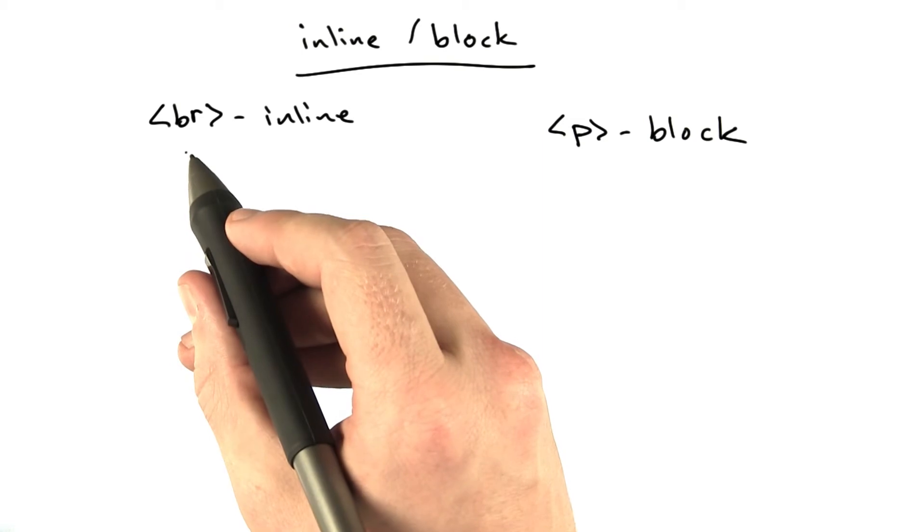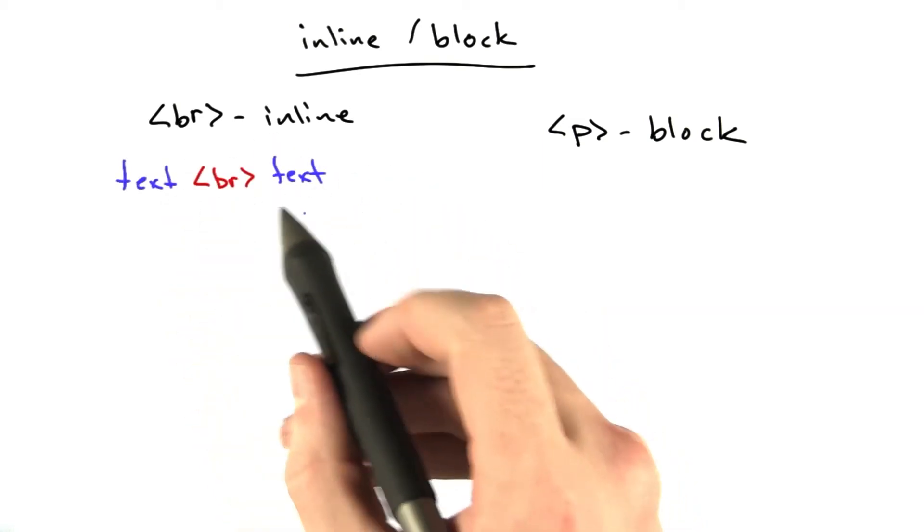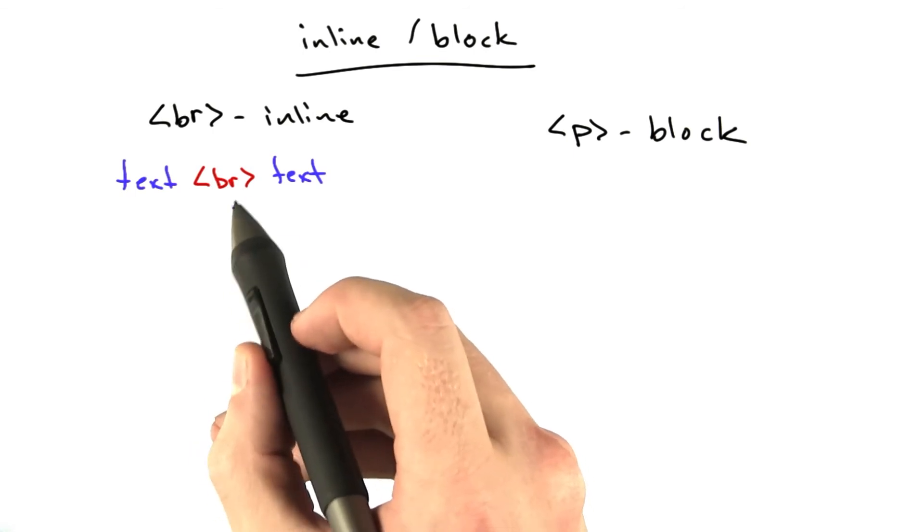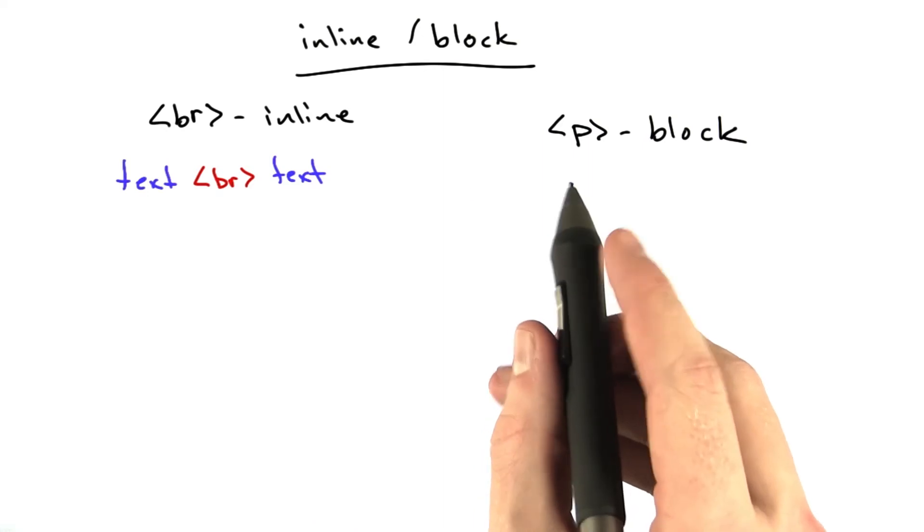What the br tag was actually doing was just ending a line. When we have some text and we put a br in the middle of it, it just basically says the line ends here and this guy wraps to the next line. The p tag works differently.